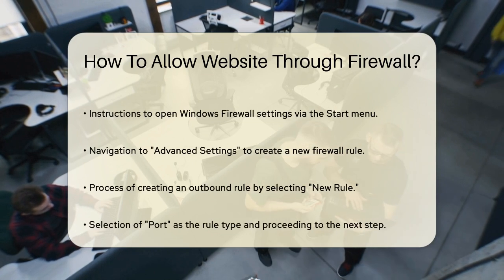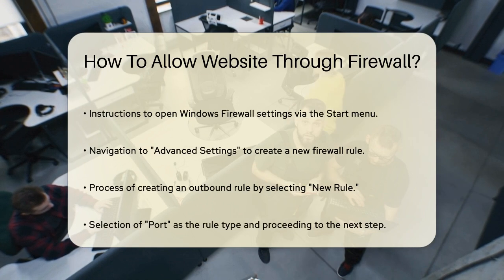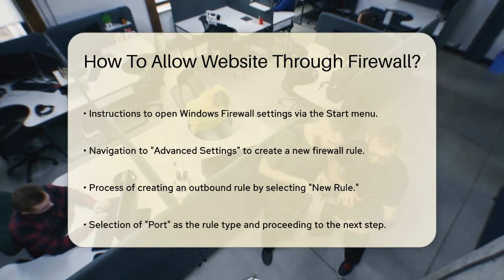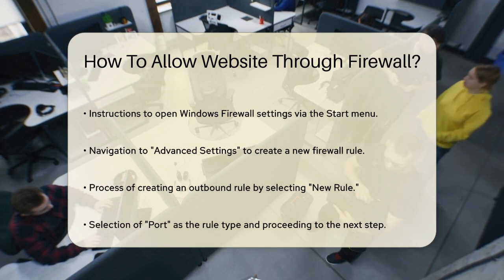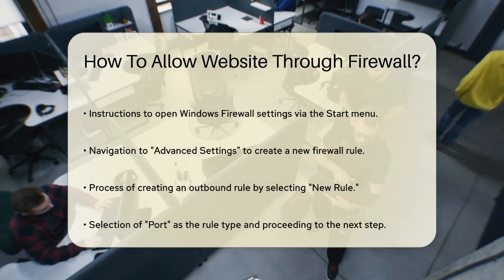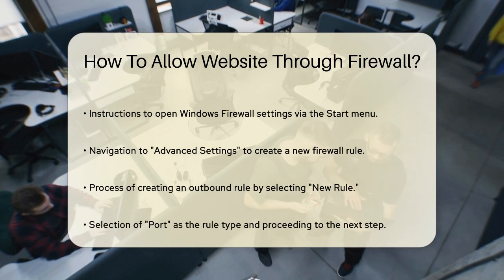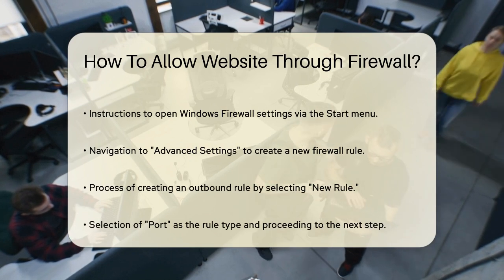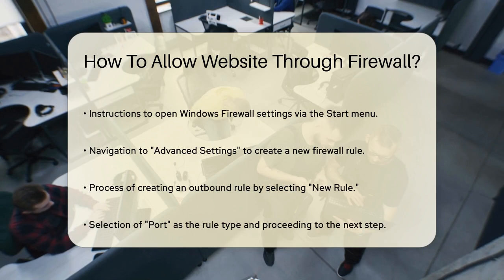Once you have the IP address, open your Windows firewall settings. You can do this by searching for Windows Defender Firewall in your Start menu. Go to Advanced Settings on the left side — here you'll create a new rule. Click on Outbound Rules and then New Rule on the right side. Choose Rule Type as Port and click Next. Select the protocol, usually TCP, and specify the local and remote ports if applicable.